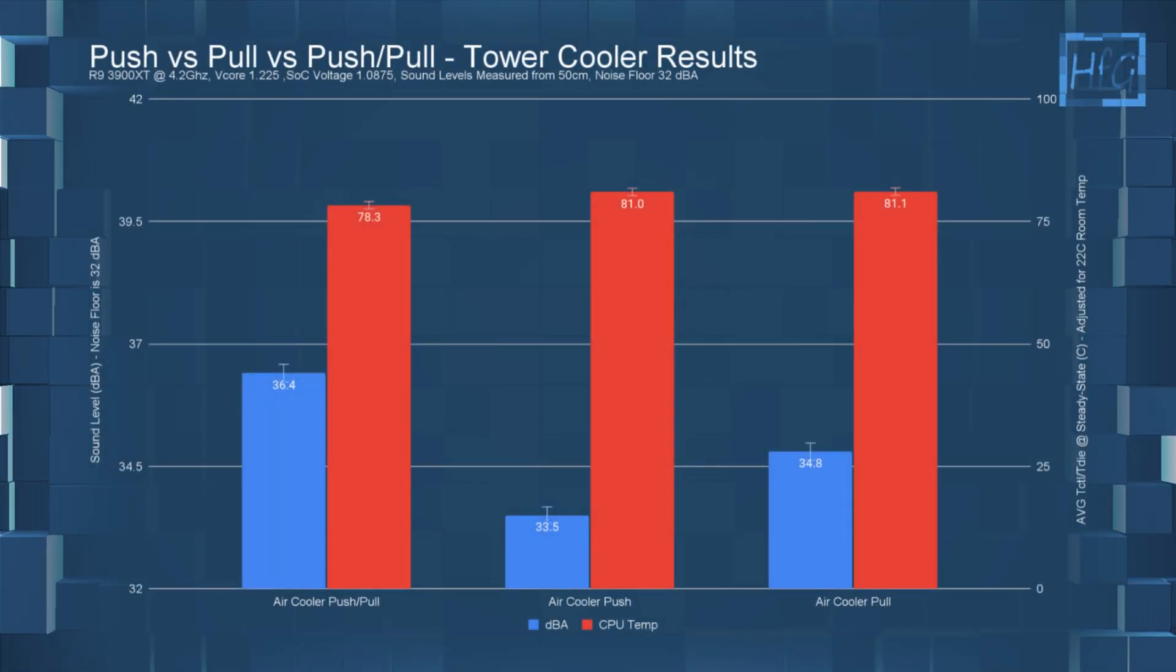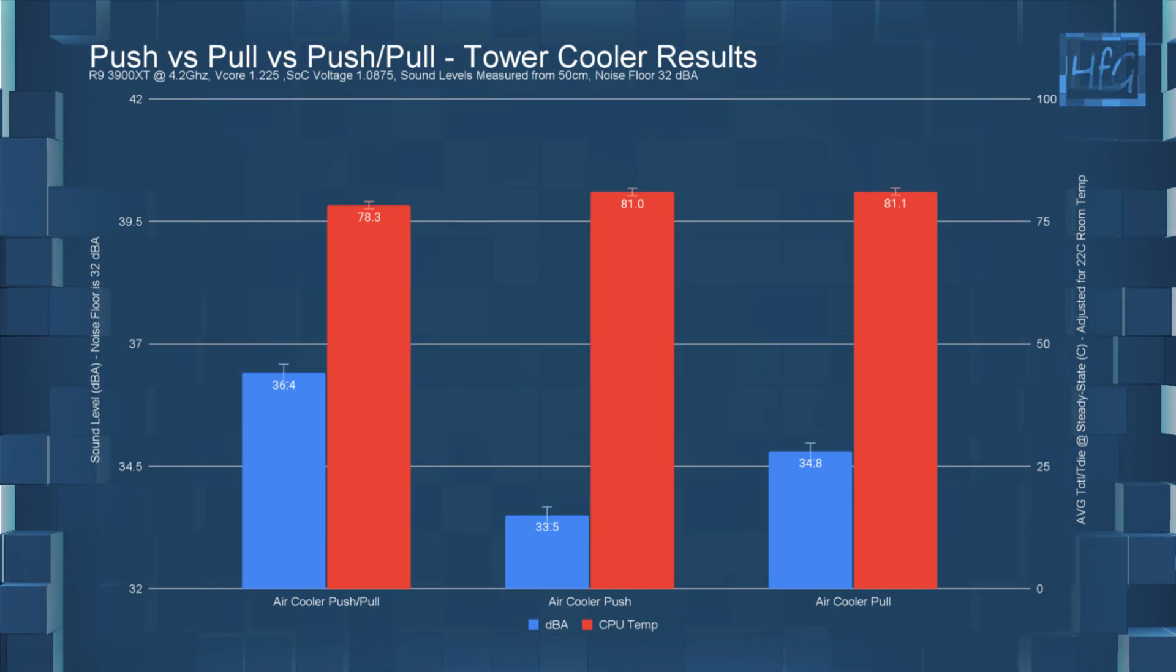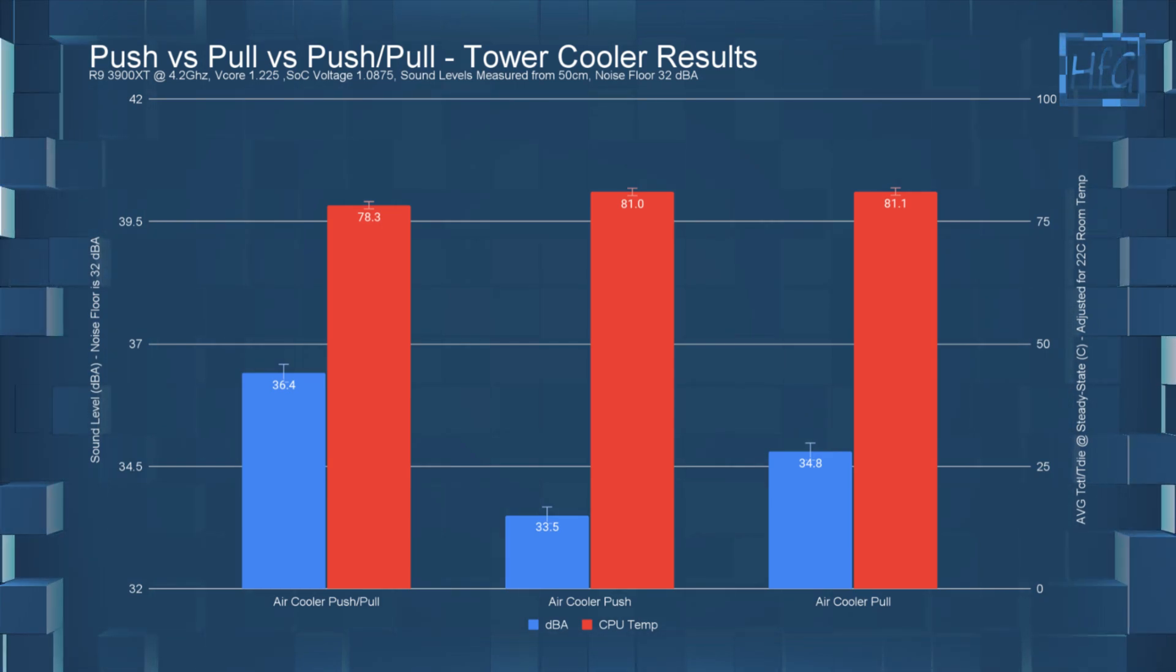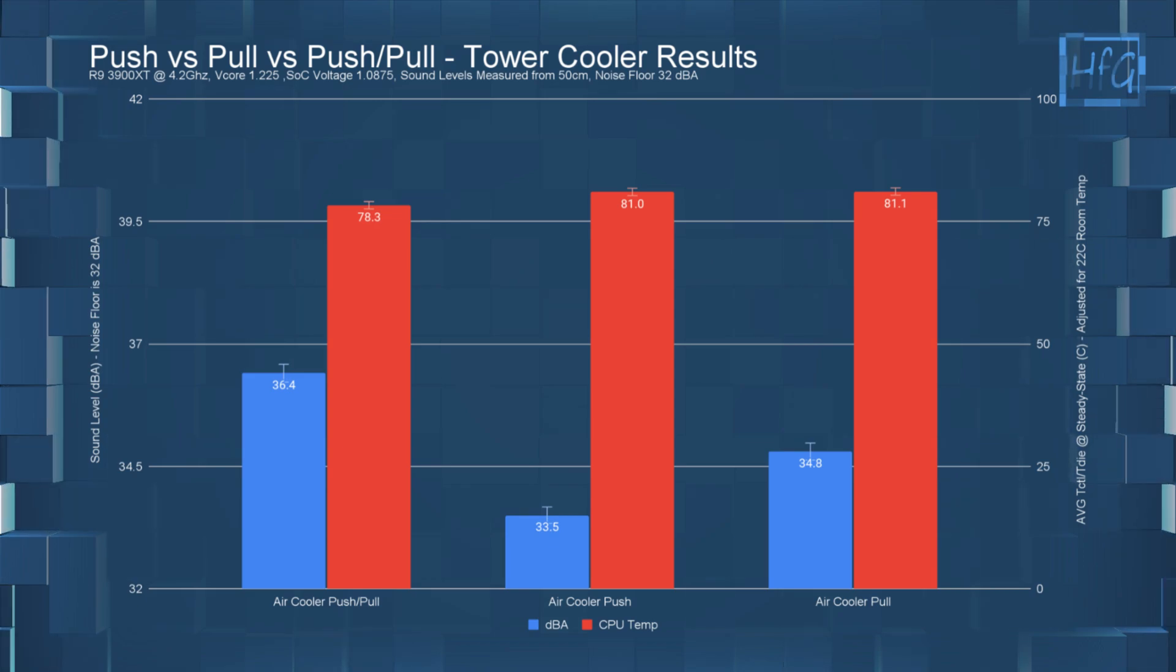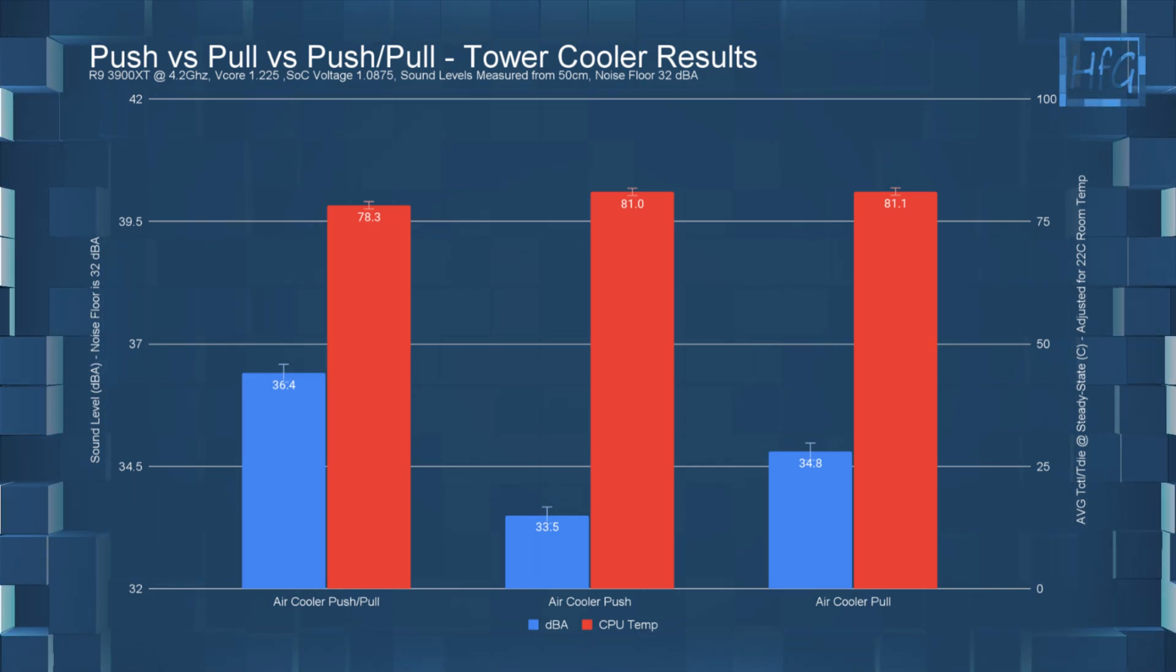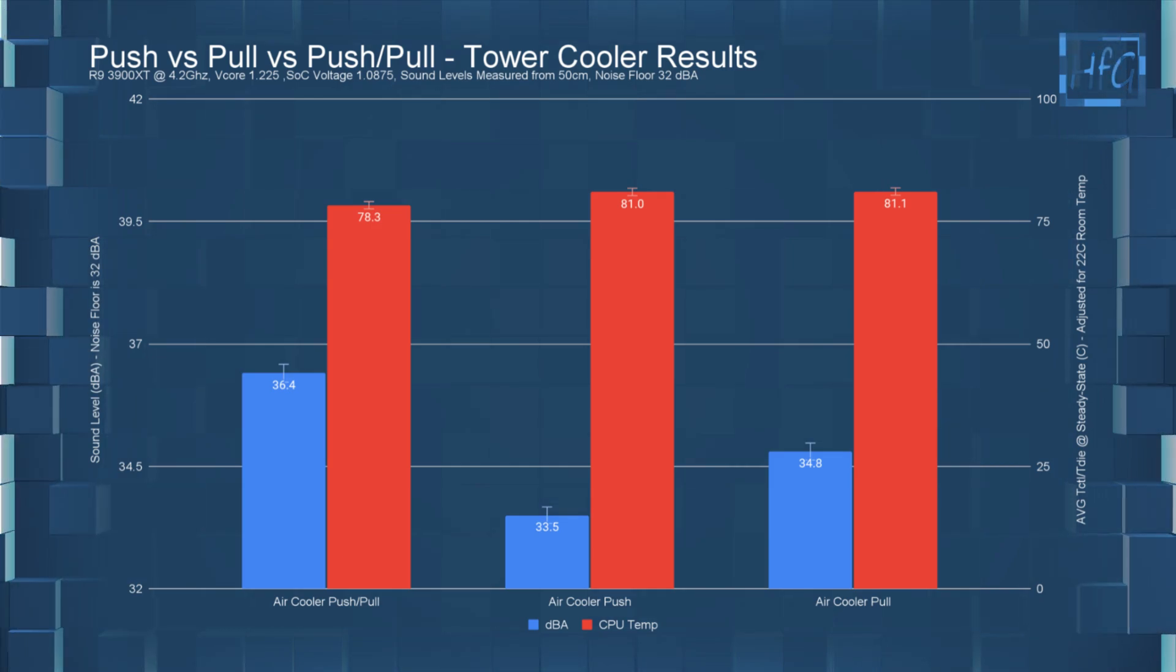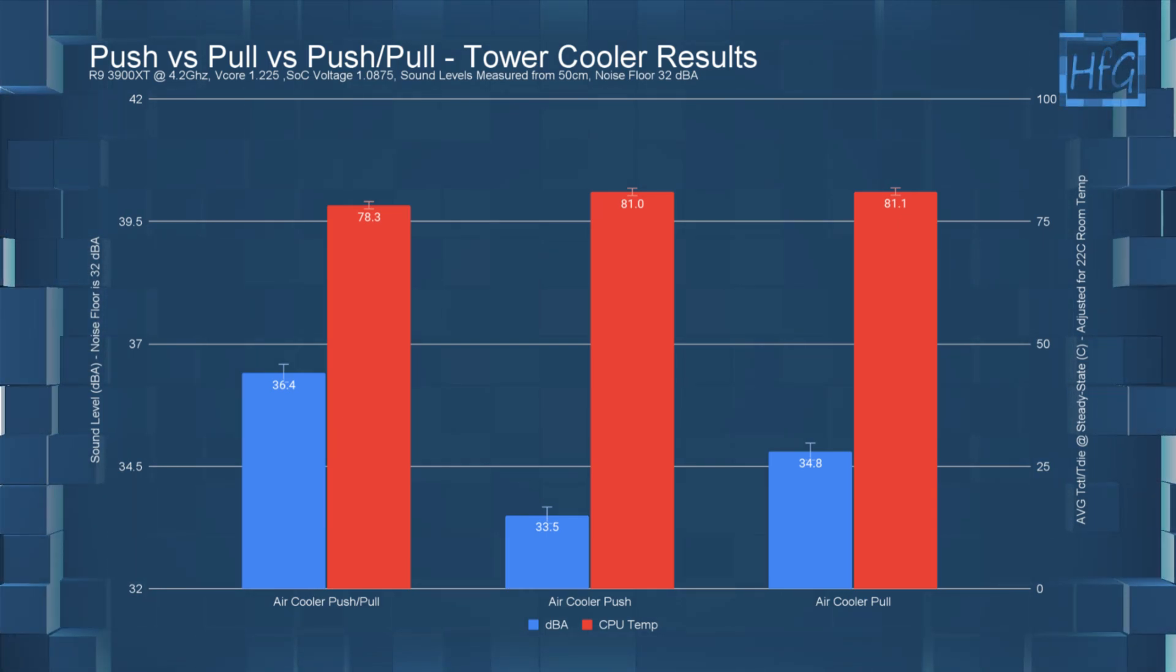Starting off with the tower cooler. As I suspected, the temperatures for push and pull were the same. But there was a difference in the dBA. Not a huge difference, but a noticeable one. This is because the pull had a much higher pitch, which I could see annoying some people. Now of course the push-pull config gave the lowest temperature, but was also the loudest.